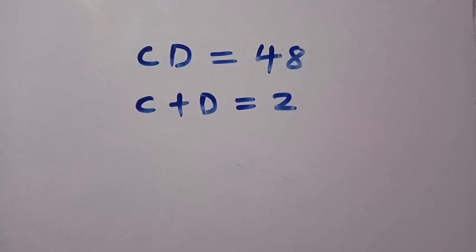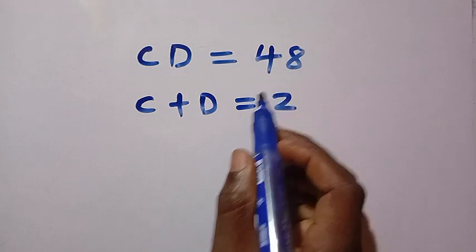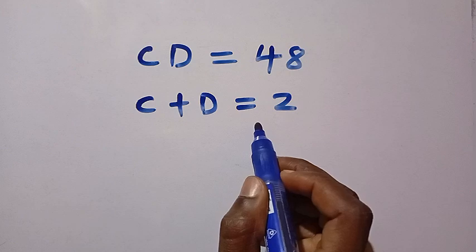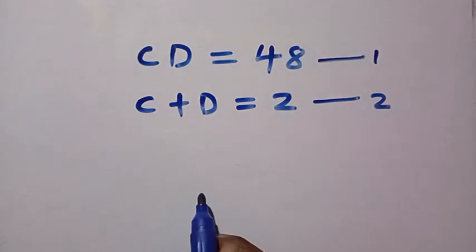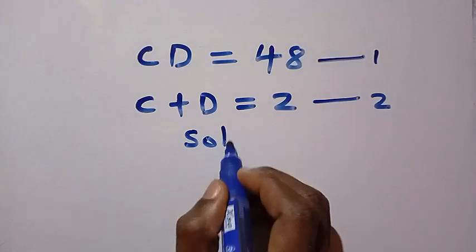Good day viewers, you are welcome. Let's see how we can solve this system of equations for C and D. We have two equations here: CD equals 48 and C plus D equals 2. So we call this one equation 1 and this one equation 2.